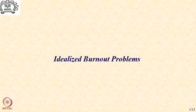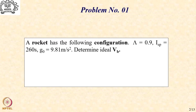Let us first explore the idealized burnout solution that we had started off at the beginning of our discussion on launch vehicle trajectories. We take the problem: a rocket has the following configuration — its propellant loading is 0.9, that is MP by M0, and it has a specific impulse of 260 seconds. Let us try and determine the ideal burnout velocity.